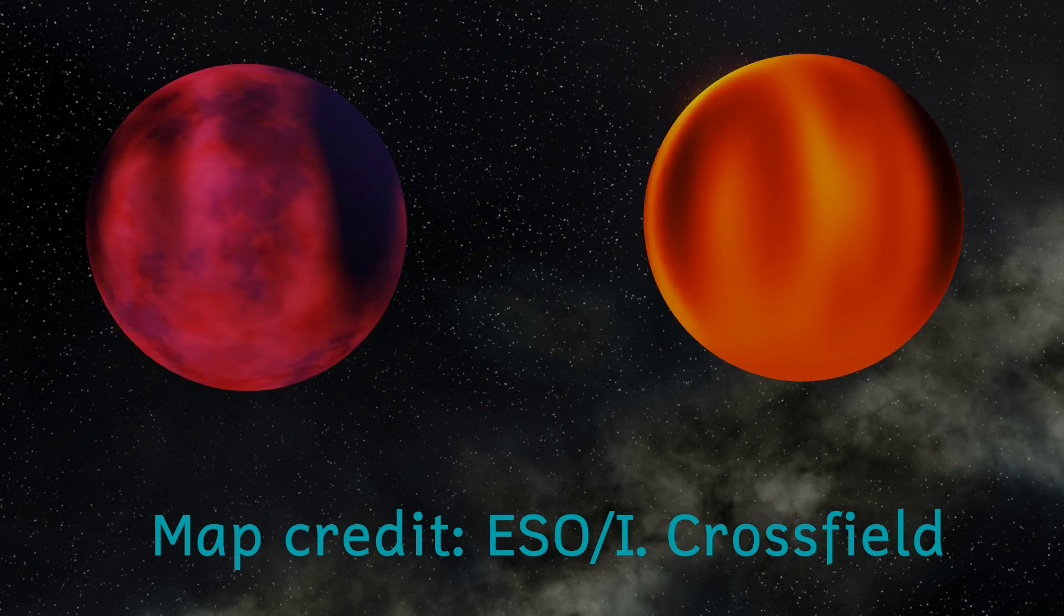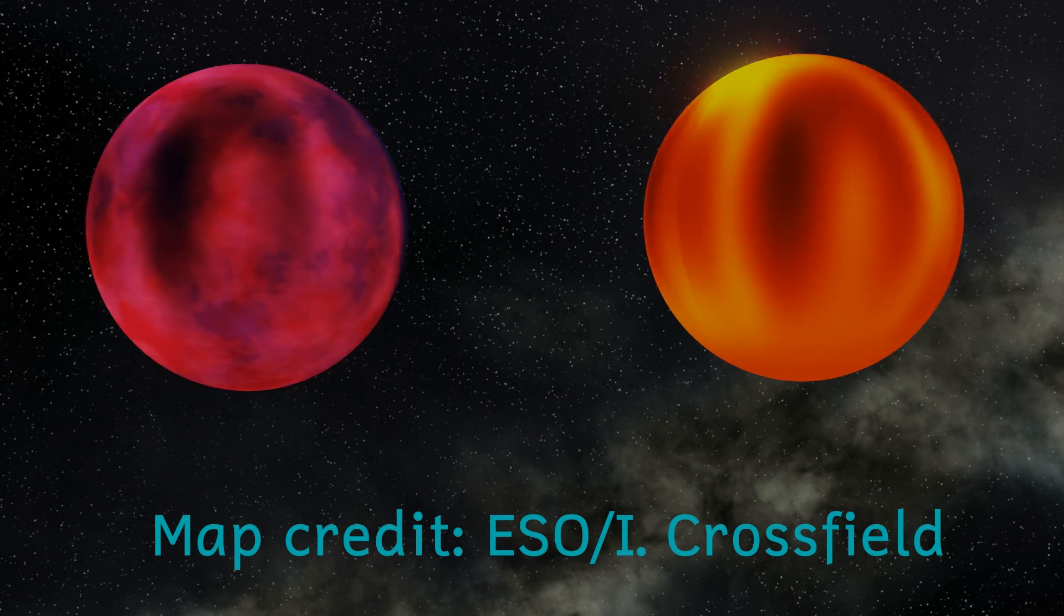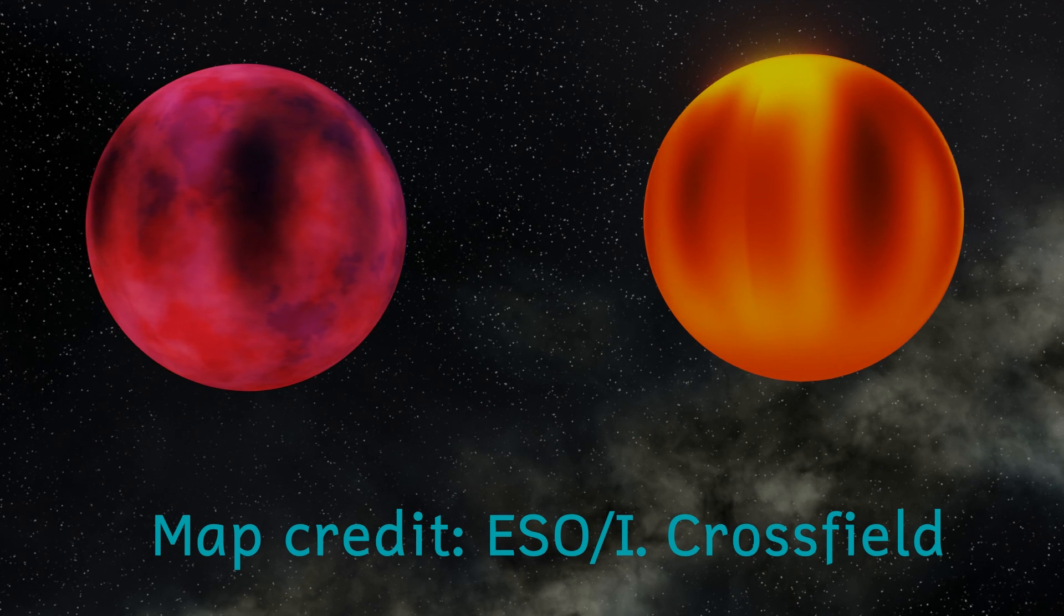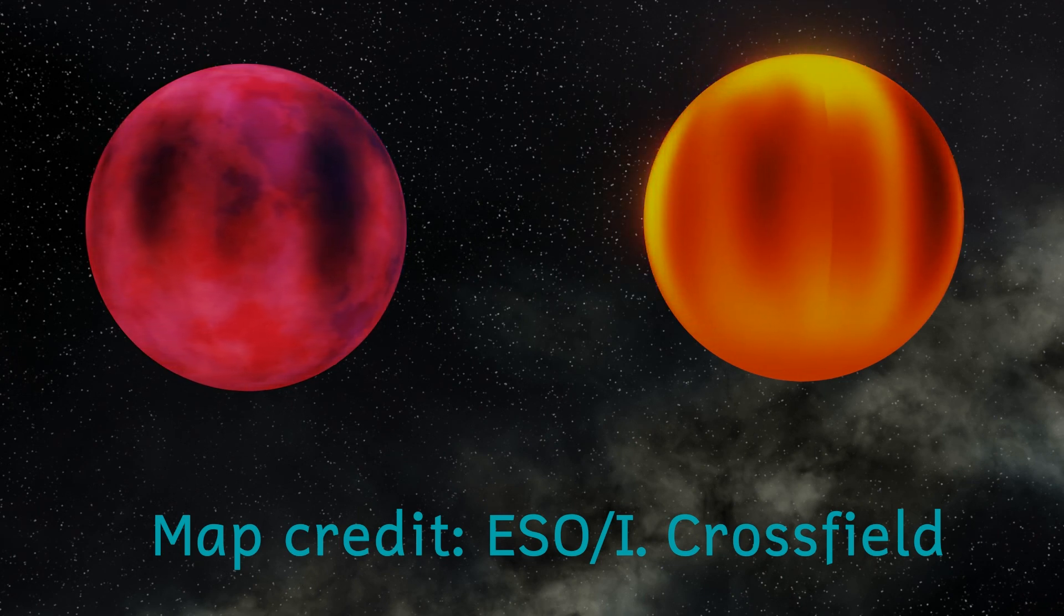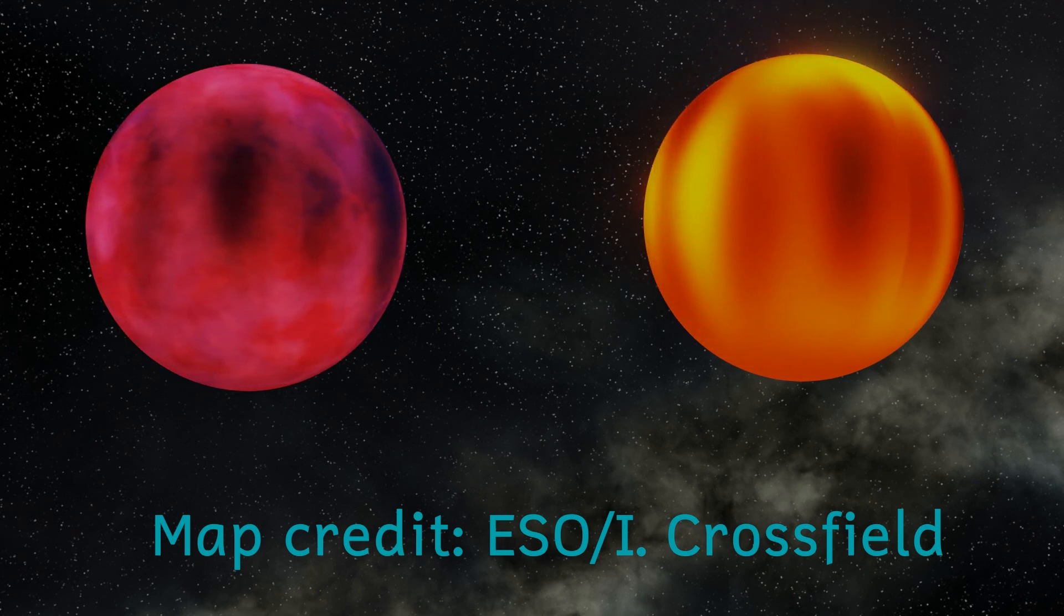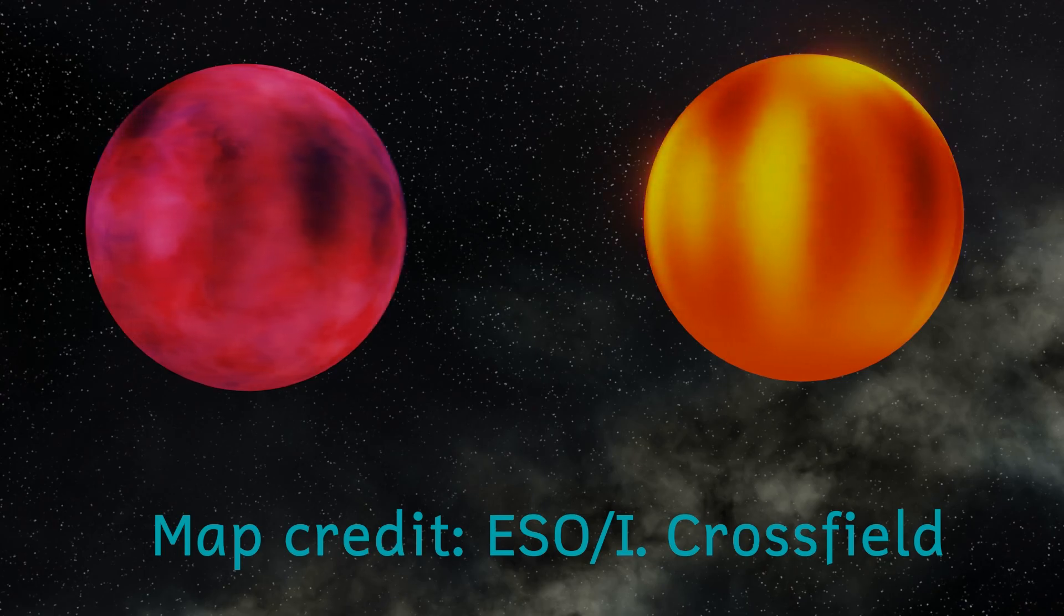This suggests that the darker regions correspond to areas with thicker clouds obscuring the light from the internal fusion going on beneath. Where there are gaps in the clouds the light from below is able to shine through.